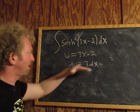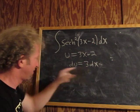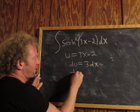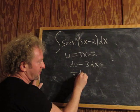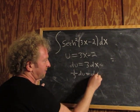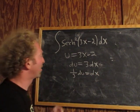The goal is to make this match what's here. Here we just have dx, so we'll divide by 3. We end up with one-third du, or simply du over 3, equals dx. The dog is going nuts. Let's just keep going.